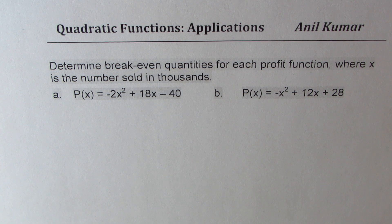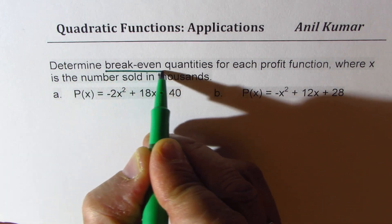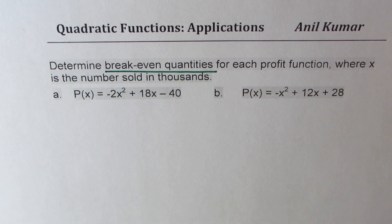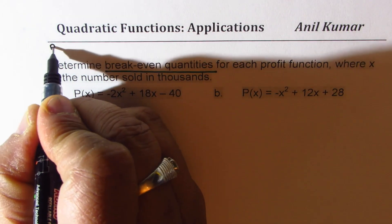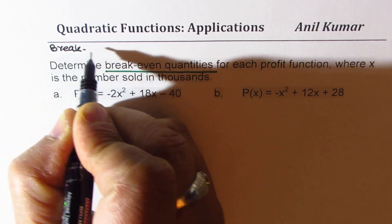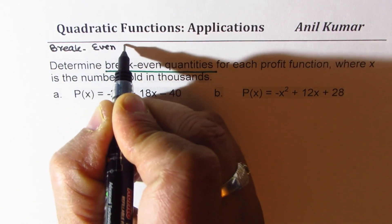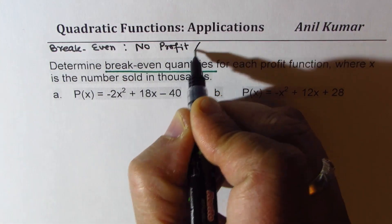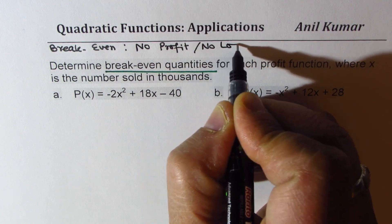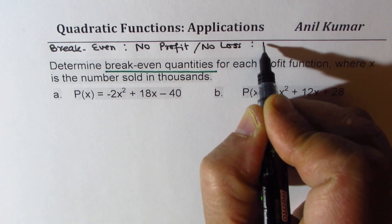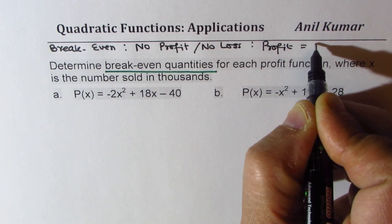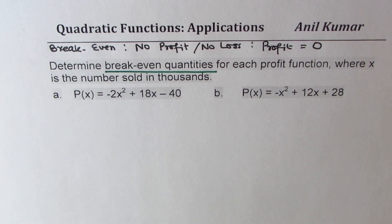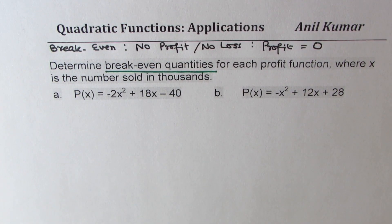Now what is break-even? So when we say break-even quantities, we mean profit is zero. Remember this: break-even means no profit, no loss, or we can say profit is equal to zero.